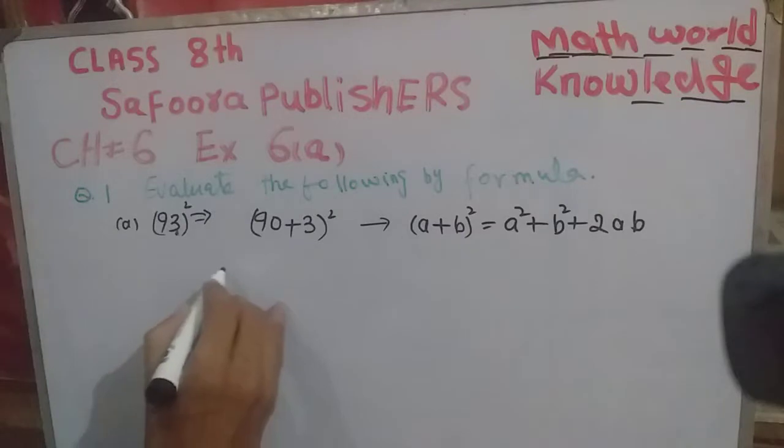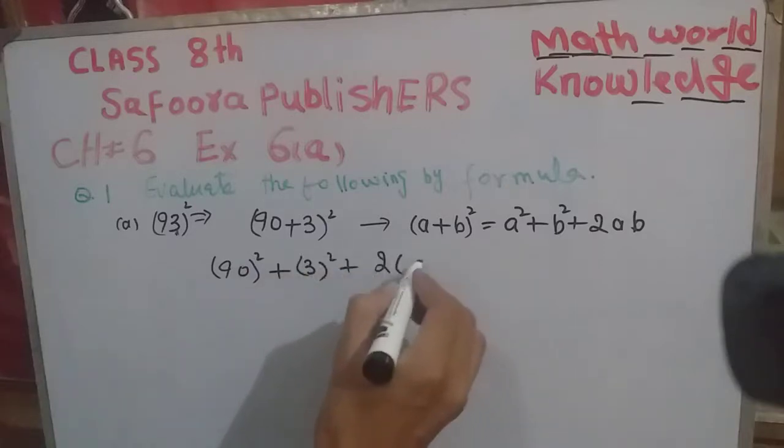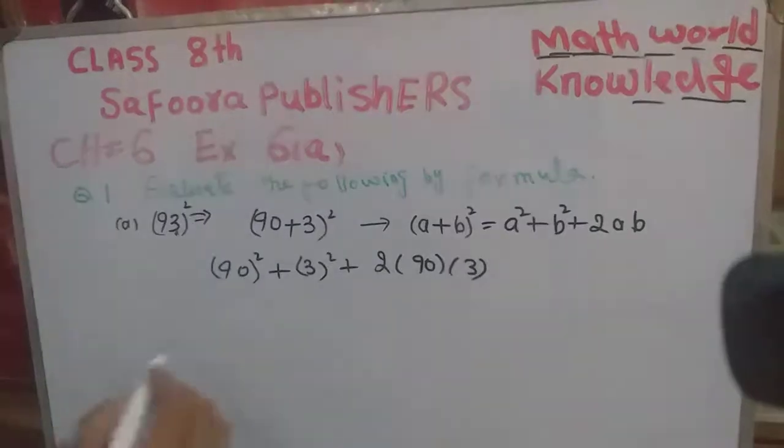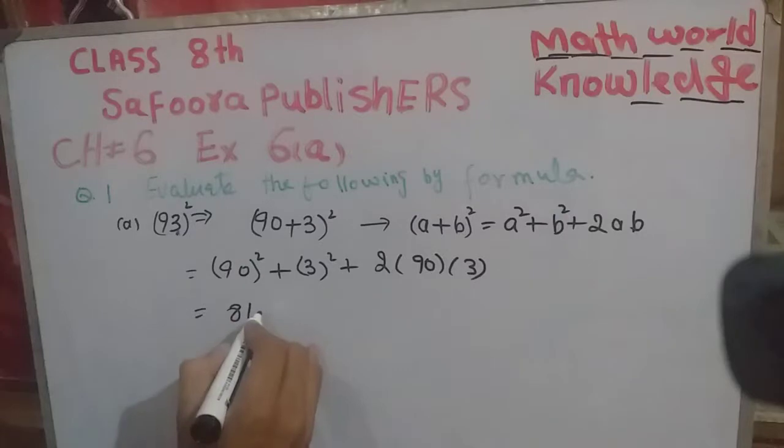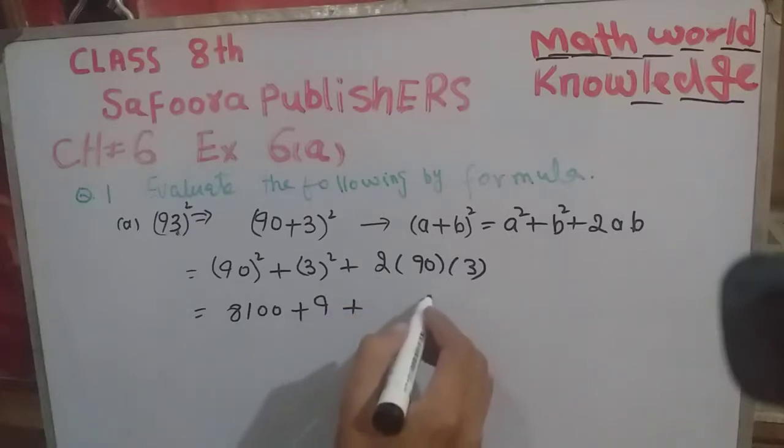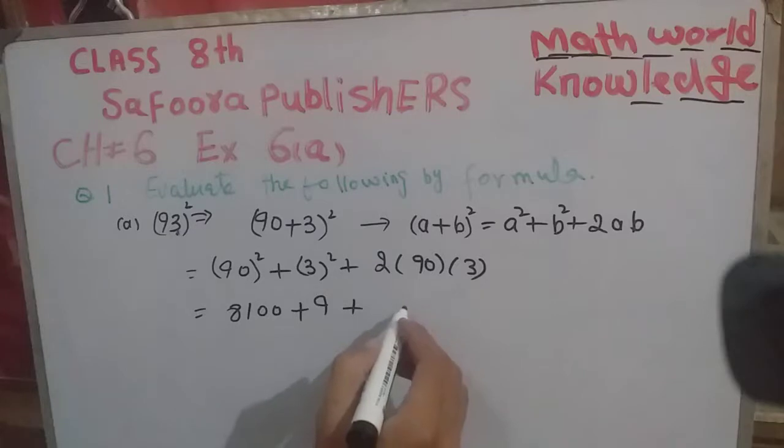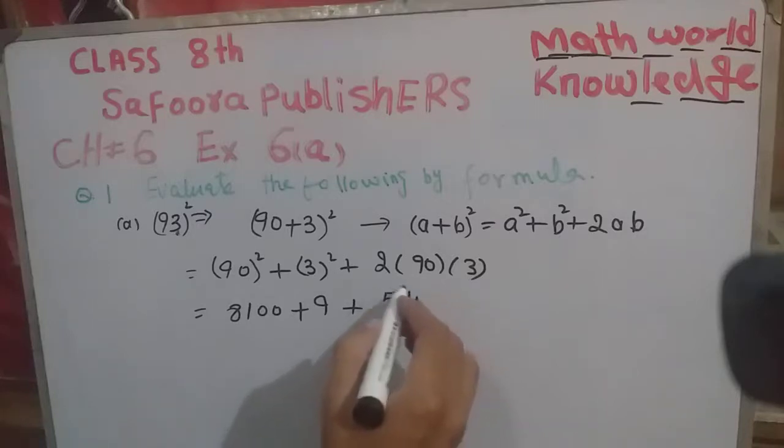Here 90 square plus 3 square plus 2 into 90 into 3, so easily solve. 9 times 9 is 81, 00, plus 3 times 3 is 9, plus 2 times 3 is 6, 6 times 90 is 540. 2 times 9s are 18, 18 times 3s are 54.